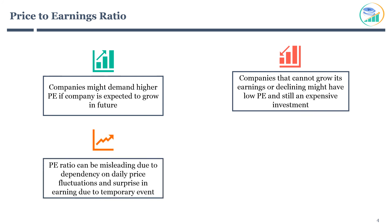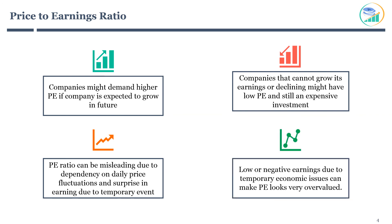P/E ratio can be misleading due to its dependency on daily price fluctuations and surprises in earnings due to temporary events. Unusually high earnings that are not sustainable can make the P/E look very cheap, but the stock may not be undervalued. Low or negative earnings due to temporary economic issues can make the P/E look very overvalued; however, the stock might be a buy if future earnings are expected to normalize and grow further.